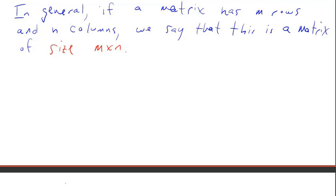In general, if a matrix has m rows and n columns, we say this matrix has size m by n. We also use the word dimensions to describe the size.